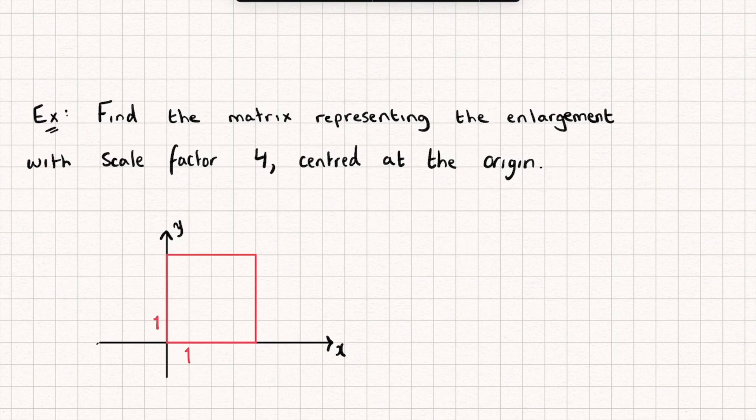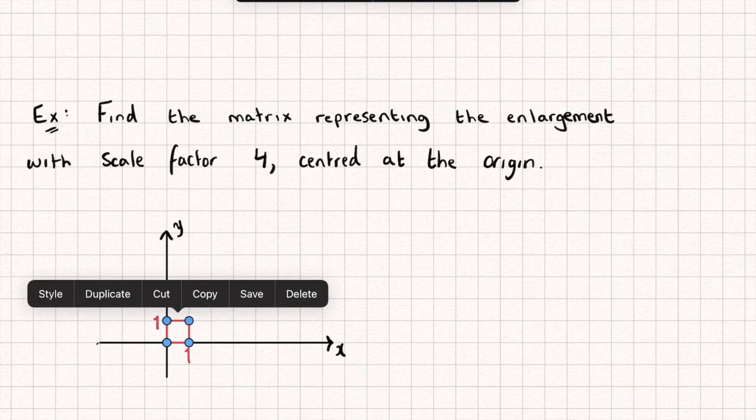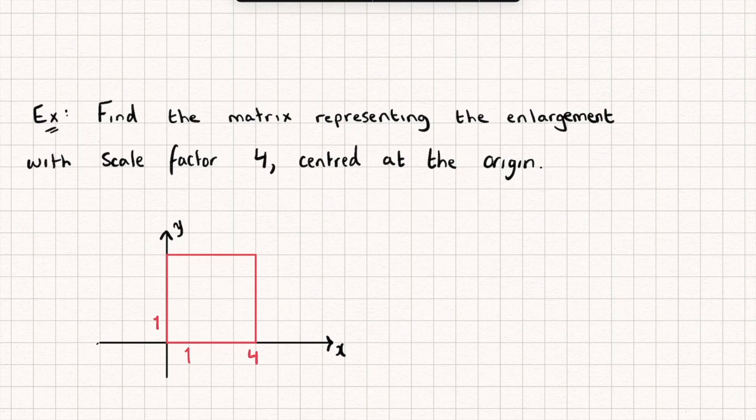Now remember in the previous video we said we could describe any matrix transformation by looking at what happens to our i and j unit vectors, or the points (1,0) and (0,1). The point (1,0) has moved from being at (1,0) to the point (4,0), so the first column of my transformation matrix is going to be 4, 0.